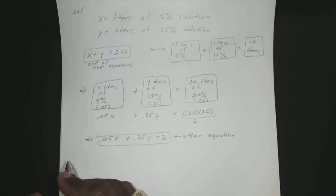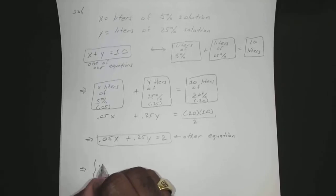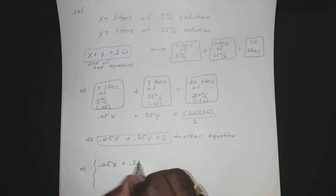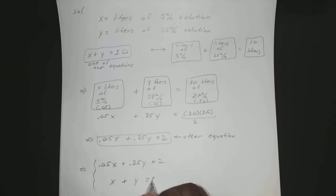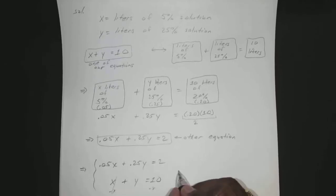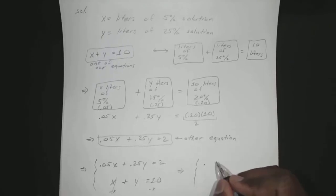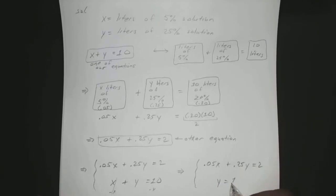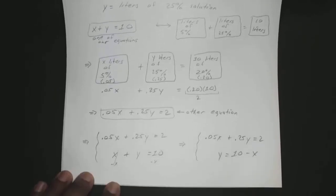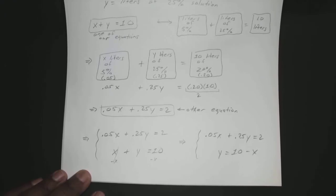So now we put that into a system: 0.05X plus 0.25Y equals 2, and X plus Y equals 10. Just like before, we solve for Y by subtracting X from both sides, which gives us Y equals 10 minus X. We can then use the substitution method. You can see the pattern for all of them is pretty much the same — if you develop that strategy, it helps instead of just randomly approaching it.